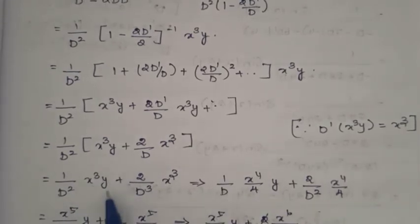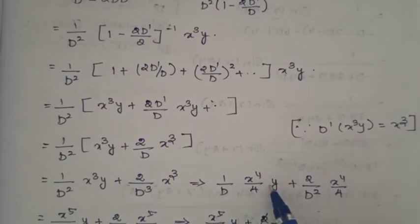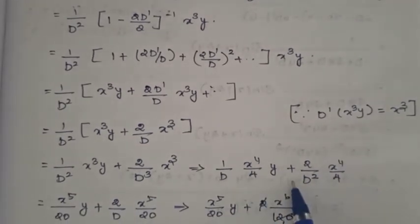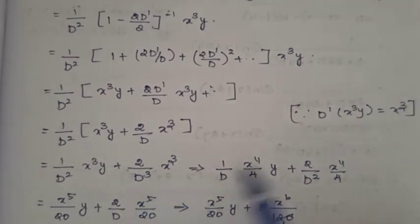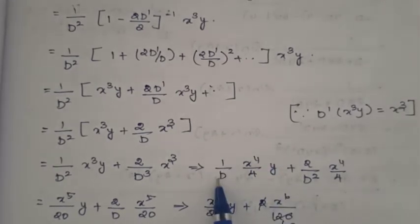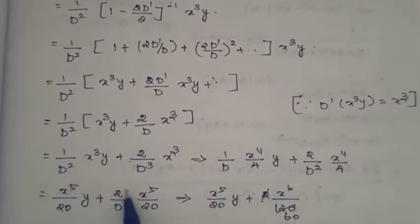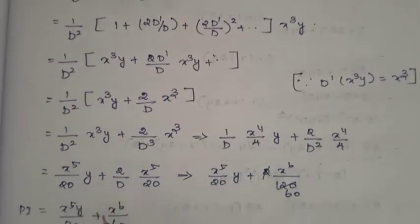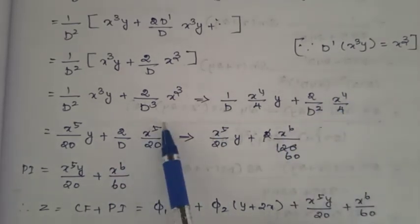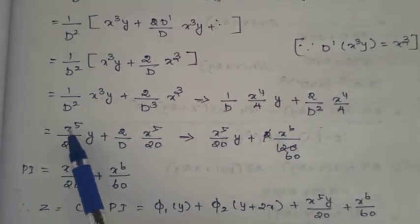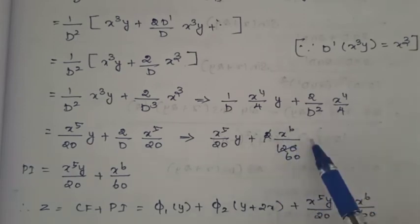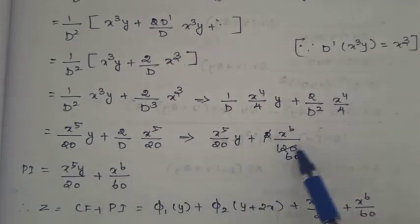Integrating once: x⁴/4 times y (treating y as constant). So we have x⁴/4 plus 2 divided by D squared times x⁴/4. Integrating again: x⁵/20 y. Then for the second term, integrating 2/D of x⁴/4 gives x⁵/20, and integrating once more gives x⁶/(20 times 6) = x⁶/120. Combining: 2 times x⁶/120 gives x⁶/60.